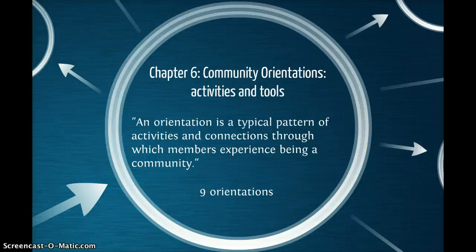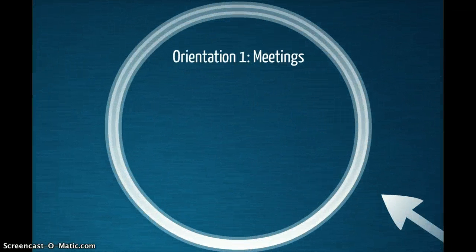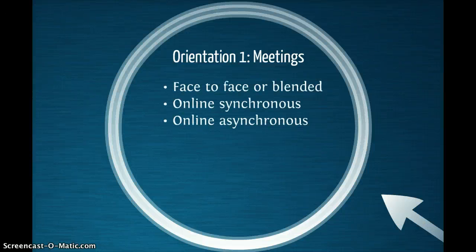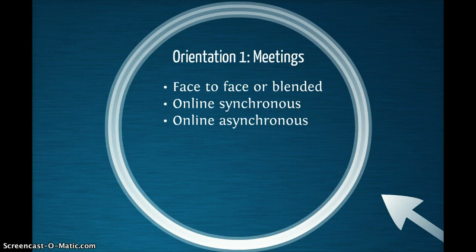This chapter defines nine orientations. The first orientation is about meetings. Meetings assert a community's existence. They can be face-to-face or blended, online synchronous at the same time but in different places, or online asynchronous at different times and places but with a time-limited focus.